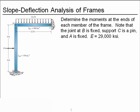Here's our indeterminate frame. We have a fixed support at A, a pinned support at C, and the internal joint at B is fixed — a rigid connection. We are going to determine the moments at the ends of each member of the frame. The modulus of elasticity is that of steel for each of the members.